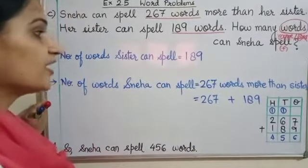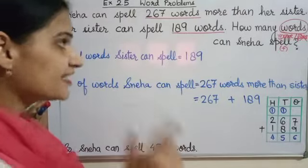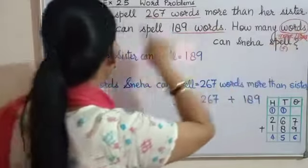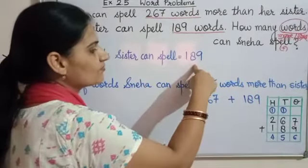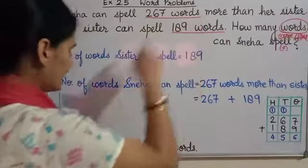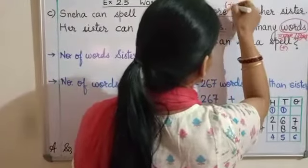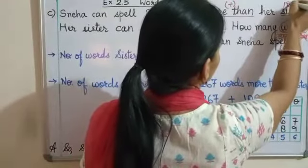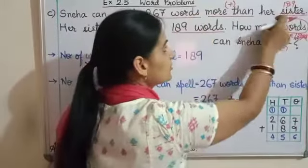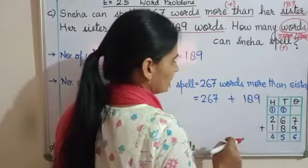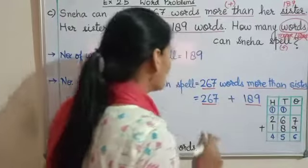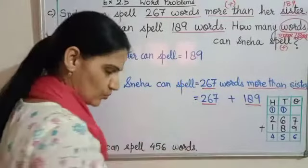Yeh toh humne samaj gaye question aur decide kar gaye — kya yeh plus hoga. 189 words ki statement likhni hai. Sister bol rahi hai — words countable cheezein hain — toh hum 'number of words' se start karein: Number of words sister can spell is 189. Sneha — two sixty seven words more than her sister. More than ka matlab hai plus. Sister ke jitne bhi words hain — 189 — usse 267 zyada. So number of words Sneha can spell is two sixty seven plus one eighty nine.